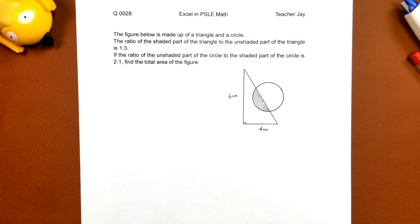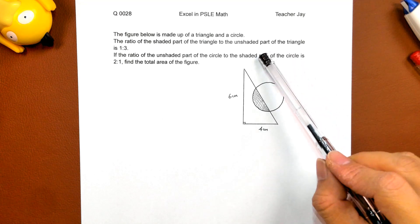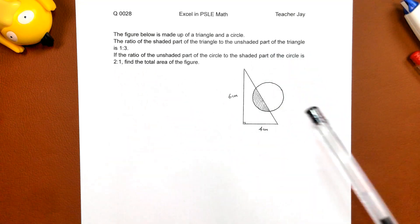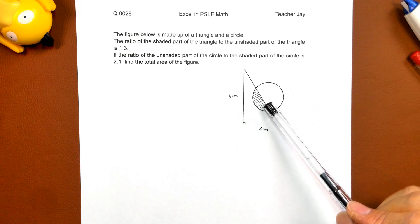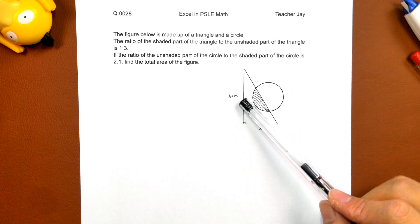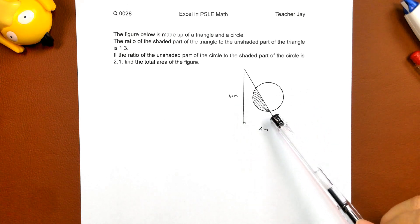The figure below is made up of a triangle and a circle. The ratio of the shaded part of the triangle to the unshaded part of the triangle is 1 to 3. Shaded part is smaller, one portion, three portions for the unshaded part of the triangle.